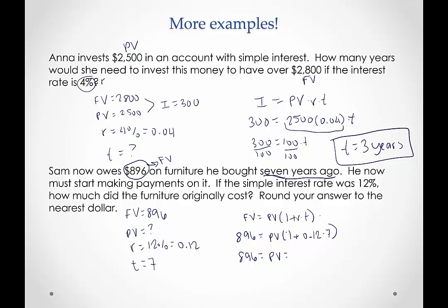So now we can isolate our variable by dividing both sides by 1.84. And we end up with a present value, remember we're rounding to the nearest dollar. So we end up with 486.956522.